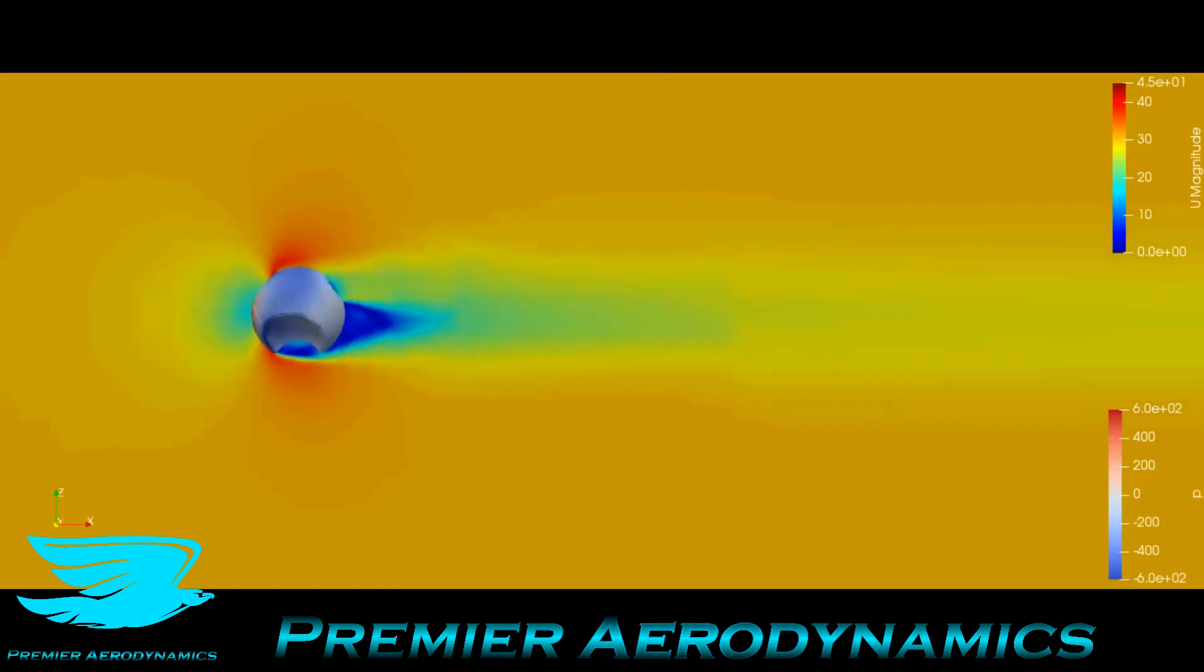As we go through, you can see that the wake is fairly asymmetric, so it changes depending on where these little dimples are.